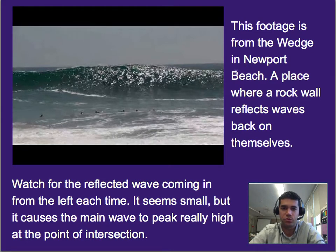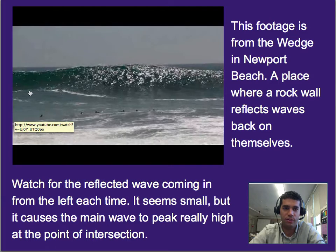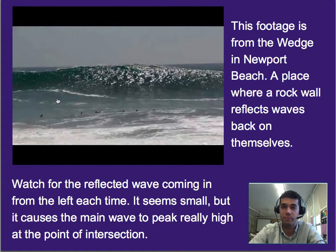It's a place where there's a rock wall on the left-hand side. What happens is as waves come in, they come in at an angle and they bounce off. What you'll see coming in from the left will be another wave — that's the reflected wave that bounced off the wall. It's going to intersect with the original waves that are coming in, and the end result is you get this kind of peak right here.